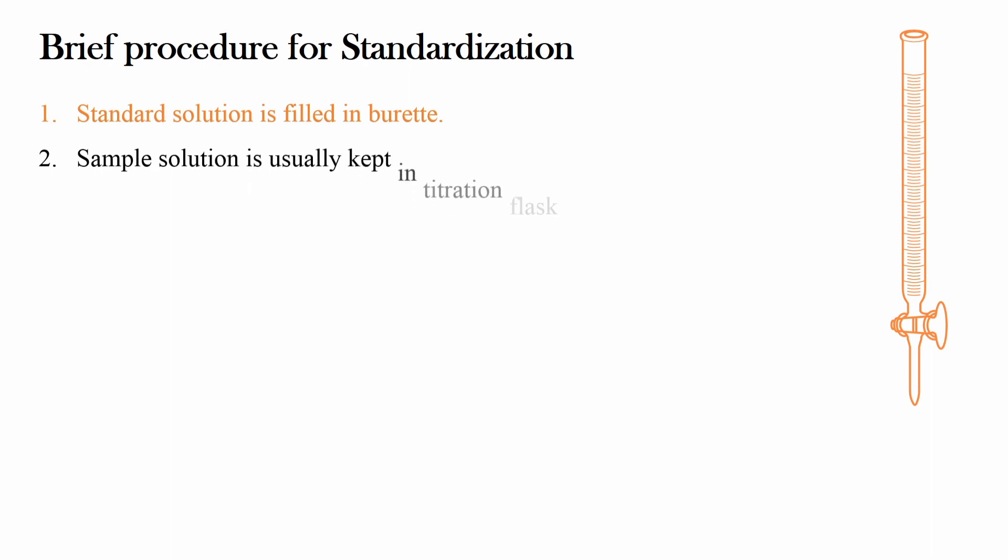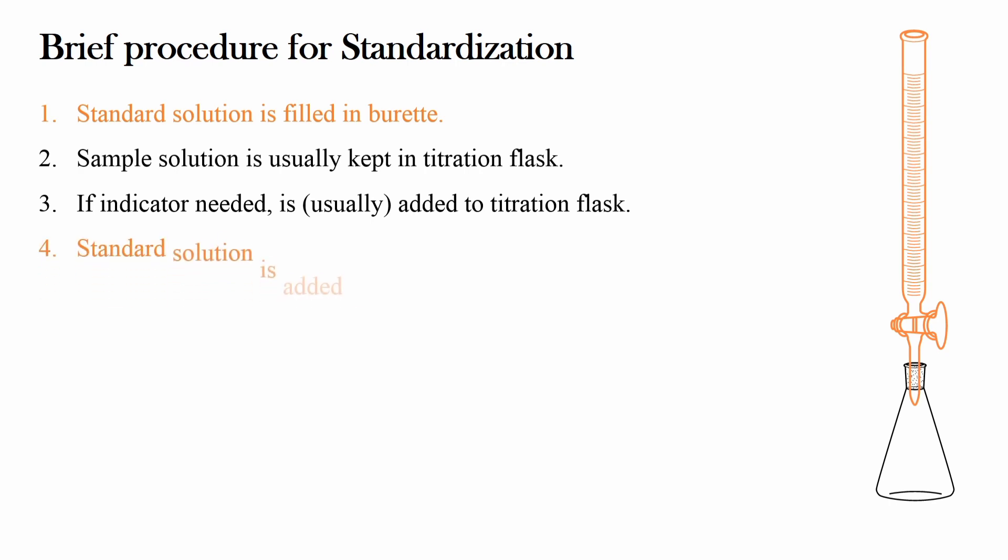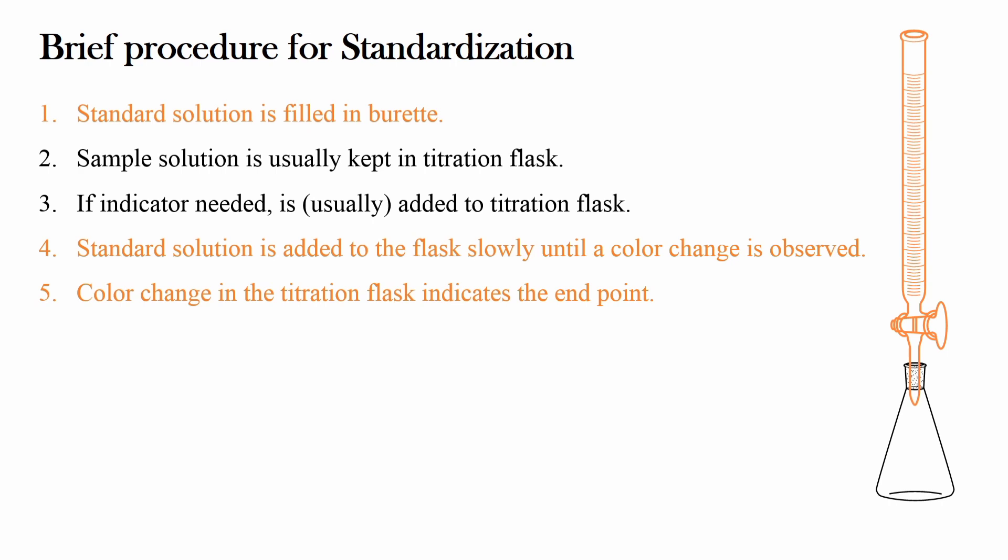Standard solution is usually filled in the burette and the sample solution is usually kept in titration flask. If needed, the indicators are usually added to the titration flask. The Standard solution is now added to the titration flask slowly until a color change is observed. The color change in the titration flask indicates the end point. Burette reading is used to find out the amount of the Standard solution reacted in the Standardization.